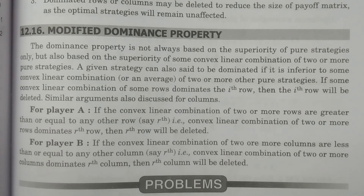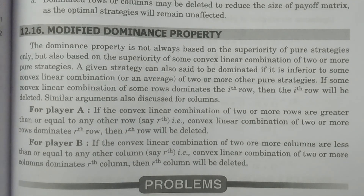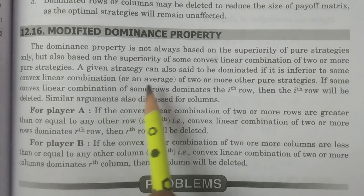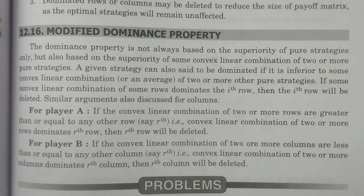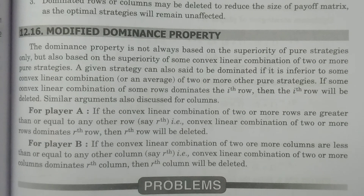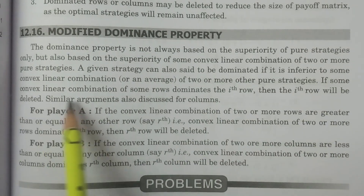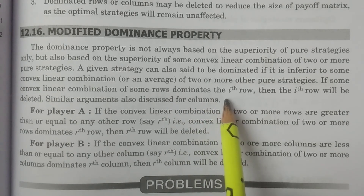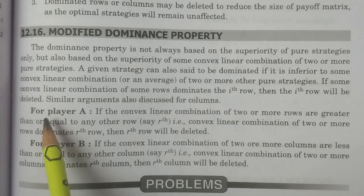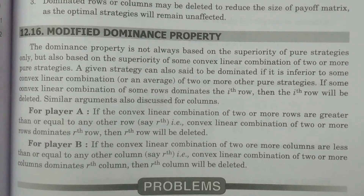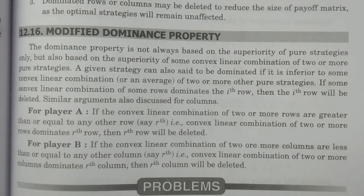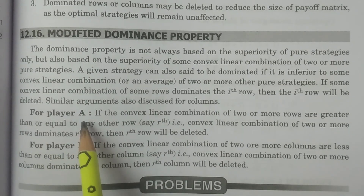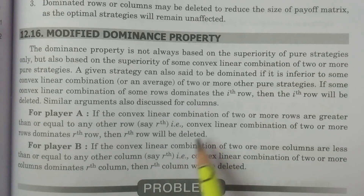If you want to compare one strategy with a convex linear combination of two or more strategies, a single particular strategy is said to be dominated if it is inferior to some convex linear combination of two or more pure strategies. Therefore, if some convex linear combination of some rows dominates the i-th row, then the i-th row will be deleted. The similar arguments apply to both rows for player A and columns for player B.